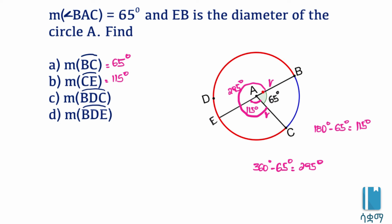It is formed by radii and the vertex is in the center, so these are central angles. Arc BDE — this is BDE, the arc BDE formed by the central angle with vertex at the center.